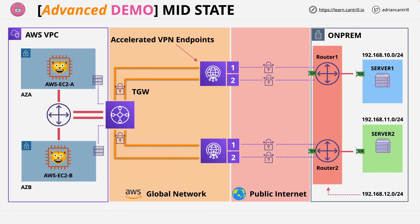Welcome back. In stage three of this mini project, you're going to establish the tunnels by configuring the on-premises side of the architecture, or at least part of it. The on-premises side has two layers: the IPsec tunnels, which you'll configure in this stage, and the BGP system, which you'll configure in the next. So let's hop over to the console and get started activating the four IPsec tunnels — two tunnels to each on-premises router, one between each router and each of the two AWS endpoints.